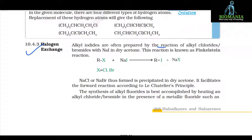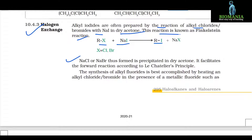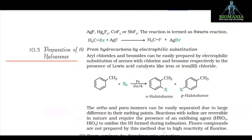10.4.3 Halogen exchange. Alkyl iodides are often prepared by the reaction of alkyl chlorides or bromides with NaI in dry acetone. This reaction is known as the Finkelstein reaction. RX + NaI → RI + NaX. NaCl or NaBr thus formed is precipitated in dry acetone, facilitating the forward reaction according to Le Chatelier's principle. The synthesis of alkyl fluorides is best accomplished by heating an alkyl chloride or bromide in the presence of a metallic fluoride such as AgF, Hg2F2, CoF2, or SbF3. This reaction is termed the Swartz reaction. CH3Br + AgF → CH3F + AgBr.